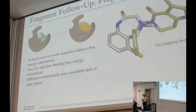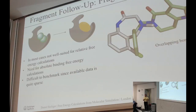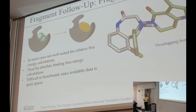The second follow-up method is called fragment merging. You have different fragments in the binding site which are only partly overlapping, and logically what you do is combine them in the most meaningful way by checking for overlapping bonds, which we call exit vectors. There might be cases where you can do this with relative free energy calculations, but in most cases I think you cannot, so we will try to tackle that with absolute binding free energy calculations. The same problem with experimental data applies here as well.